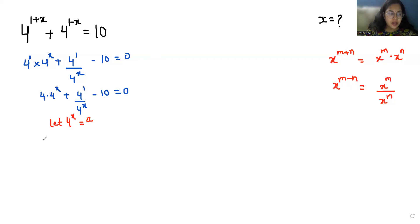So it becomes 4a plus 4/a minus 10 equals 0. If I take the LCM, it becomes 4a^2 + 4 - 10a = 0. This a goes to the other side, so 0 times a is 0. So 4a^2 - 10a + 4 = 0.